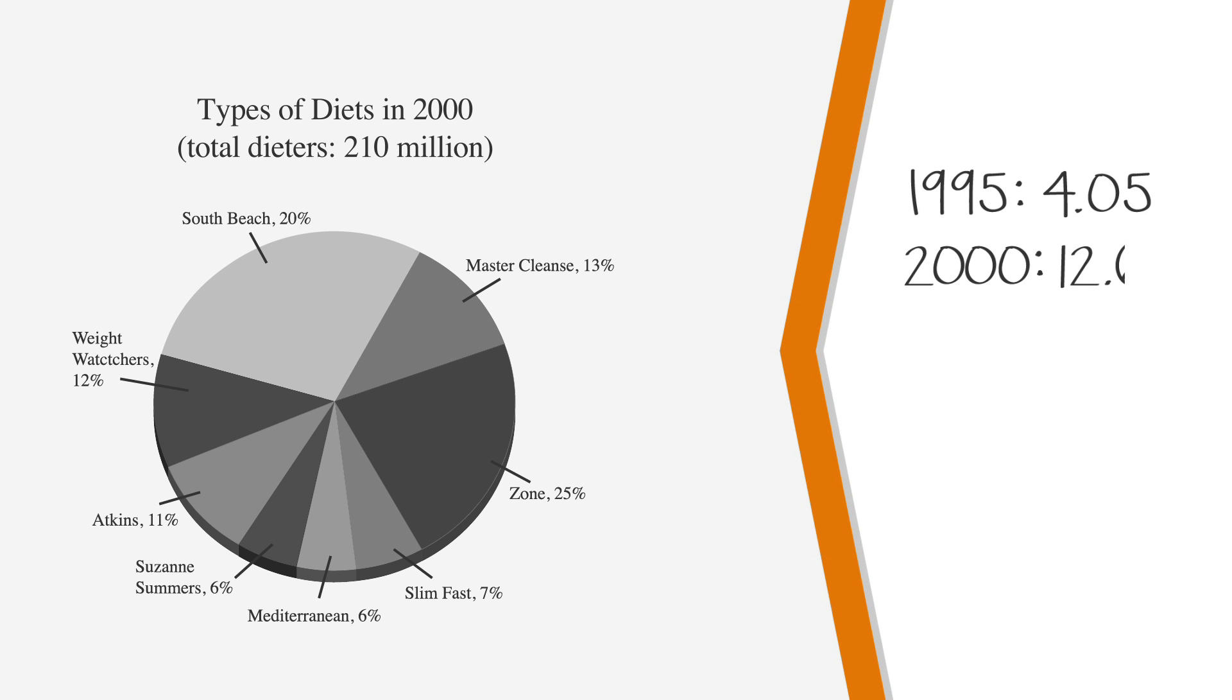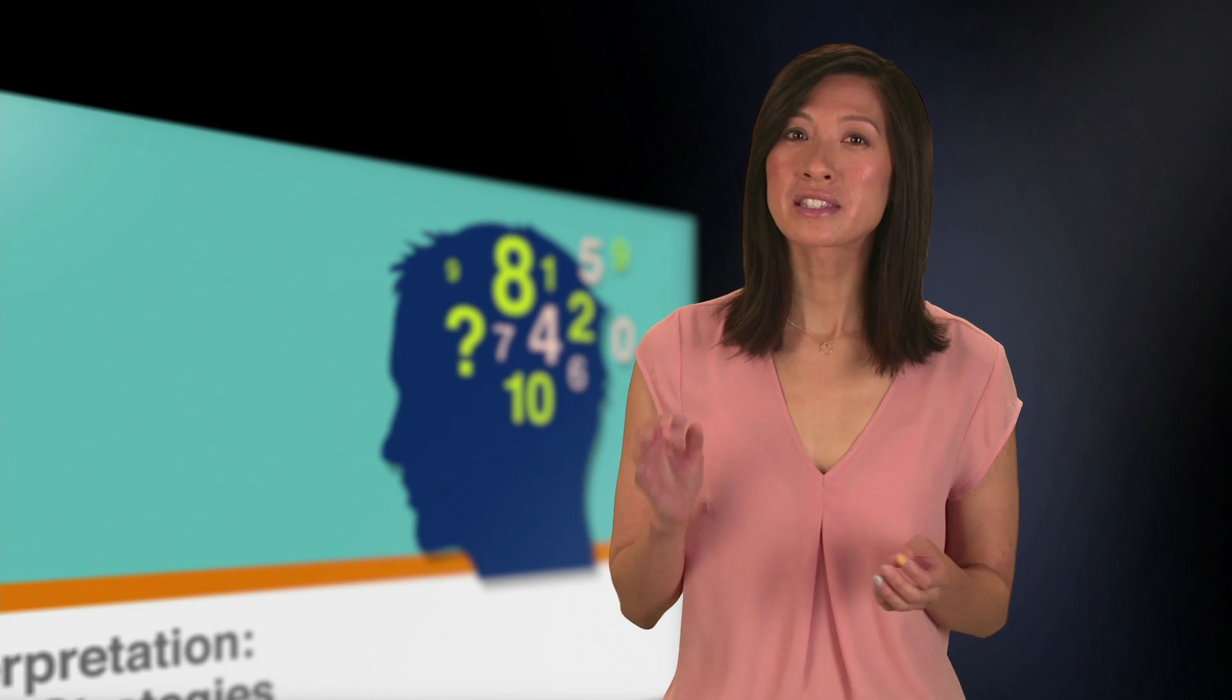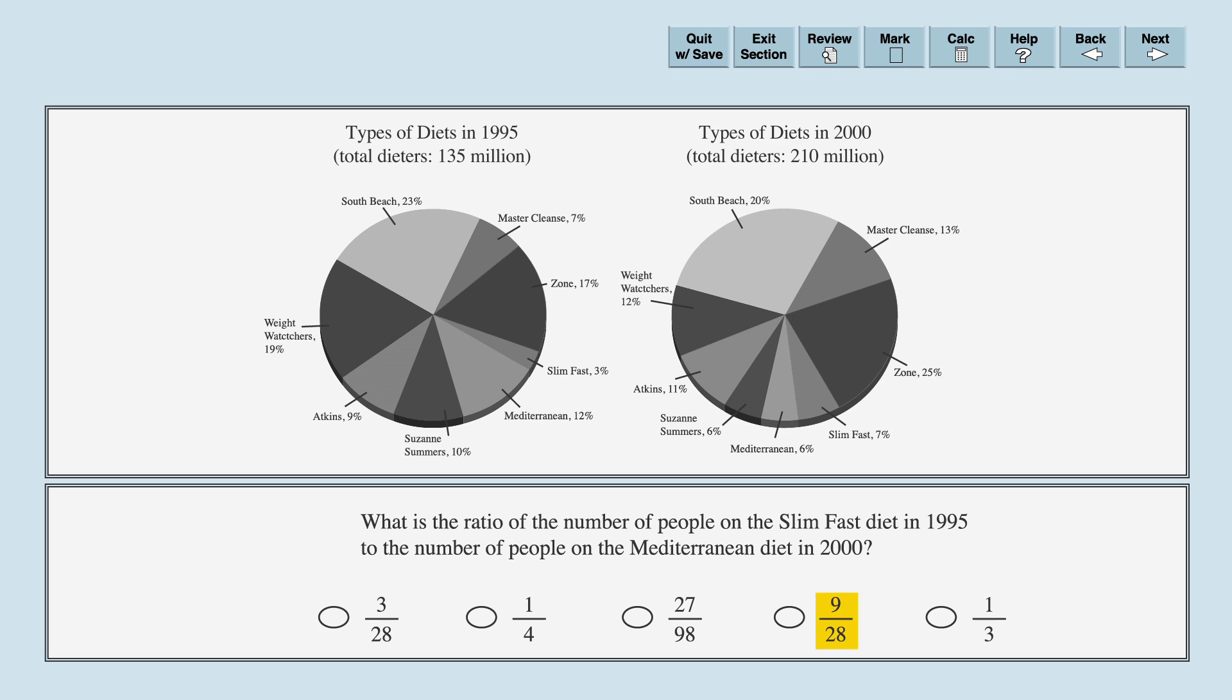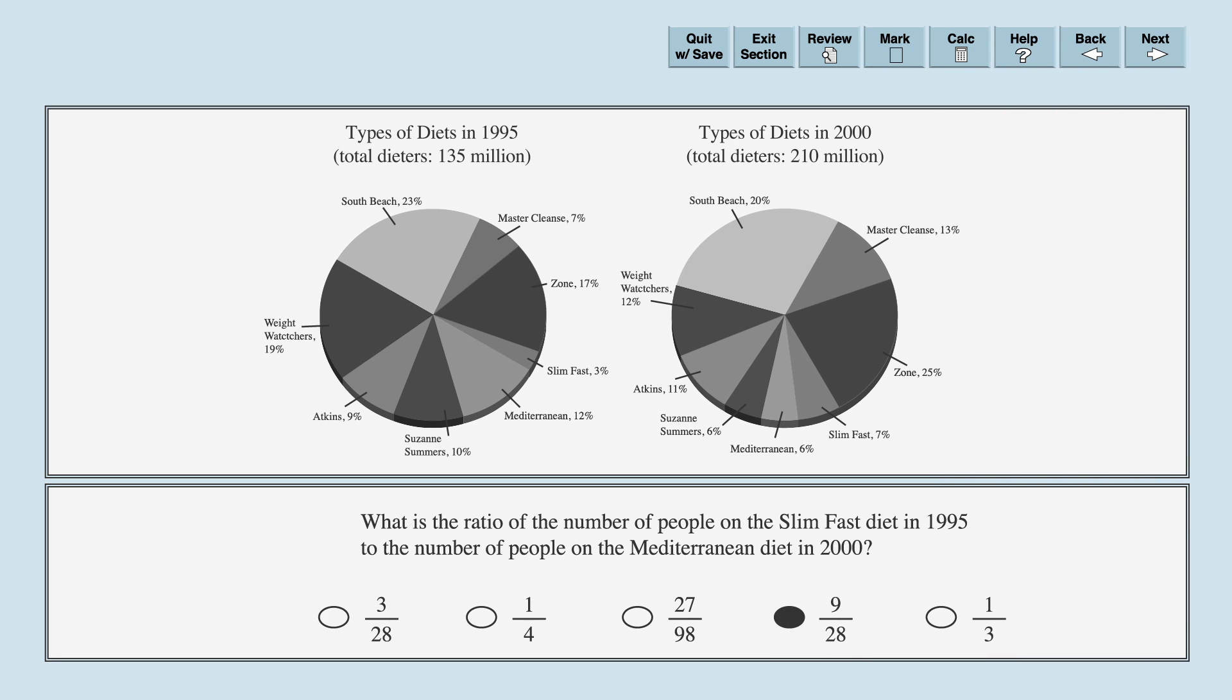Let's jot that down as well. So the ratio of the number of people on the SlimFast diet in 1995 to the number of people on the Mediterranean diet in 2000 is 4.05 divided by 12.6, which rounds to .32, or 32 over 100. This is less than a third, which is the fifth option. We're looking for a value that is smaller than this. Keeping this in mind, let's solve for the fourth answer choice. The fourth answer choice is 9 over 28. 9 divided by 27 equals a third, so if we divide 9 by 1 more, 28, we'll have a little less. So the correct answer is the fourth choice.